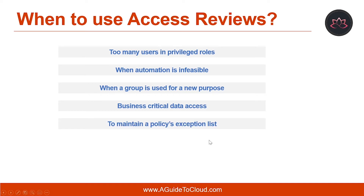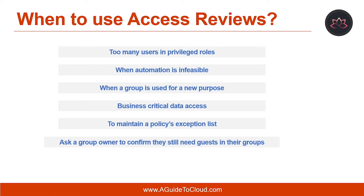The fourth type is to maintain a policy exemption list. In an ideal world, all users would follow the access policies to secure access to your organization's resources. However, sometimes there are business cases that require you to make exceptions. Another way you can use access reviews is to ask group owners to confirm they still need guests in their groups. Employee access might be automated with some on-premises IAM, but not invited guests. If a group gives guests access to business-sensitive content, then it's the group owner's responsibility to confirm the guests still have a legitimate business need for access.